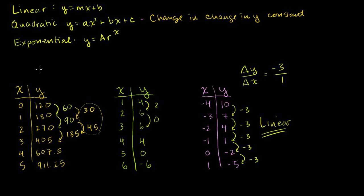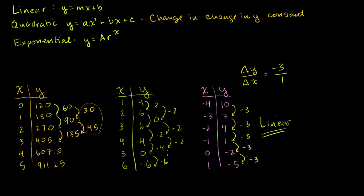Now looking at the second dataset. The changes in y are: +2, 0, −2, −4, −6 — clearly not constant, so not linear. But let's look at the second differences. From 2 to 0, that's a change of −2. From 0 to −2, that's a change of −2. From −2 to −4, a change of −2. From −4 to −6, a change of −2. This one is looking quadratic — the second differences are constant at −2. So this data fits the requirement for a quadratic function. I'll show you in the next video why this works. This one here is quadratic.